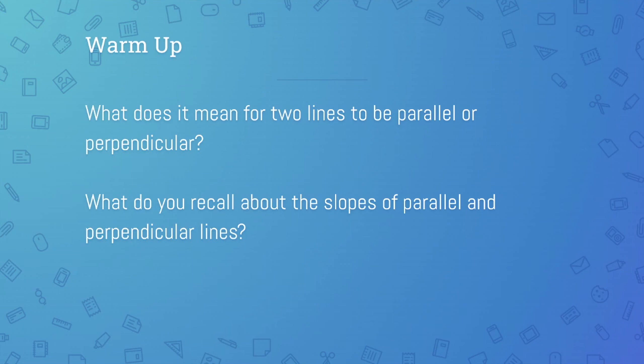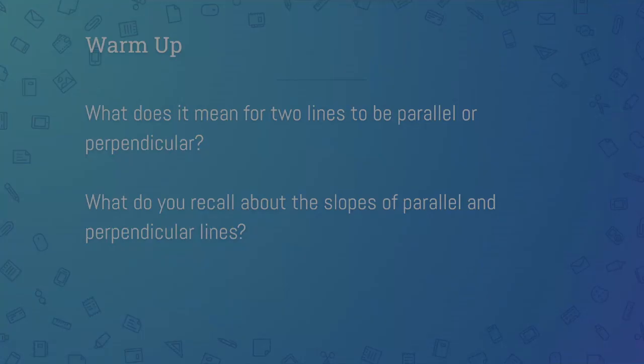What about perpendicular lines? How do their slopes compare? Their slopes are opposite reciprocals — their product, if you multiply them together, is negative 1. We're going to use that more in the next lesson. So let's go ahead and jump into today's lesson.